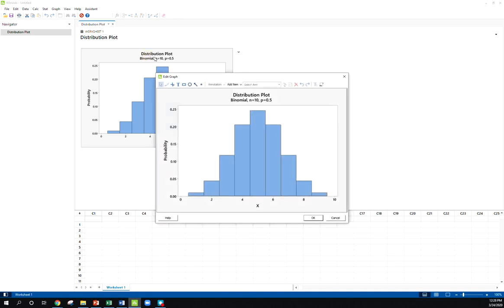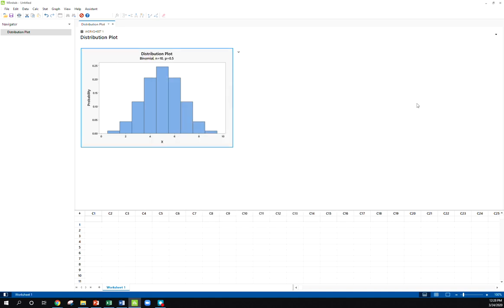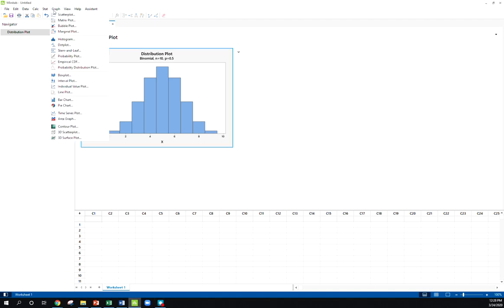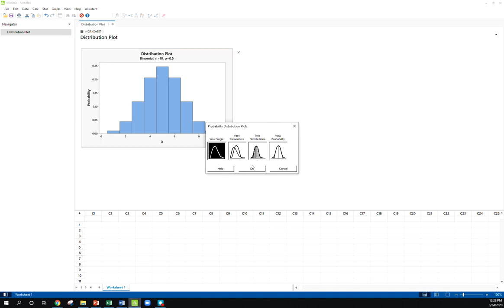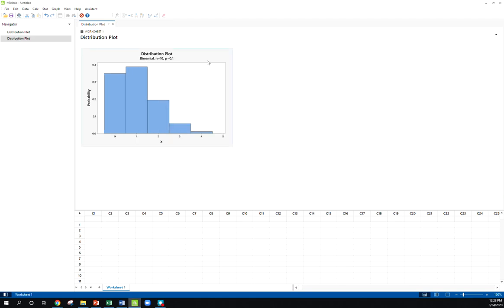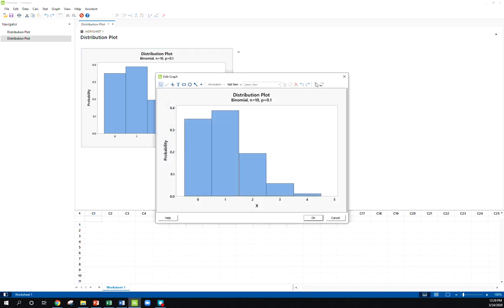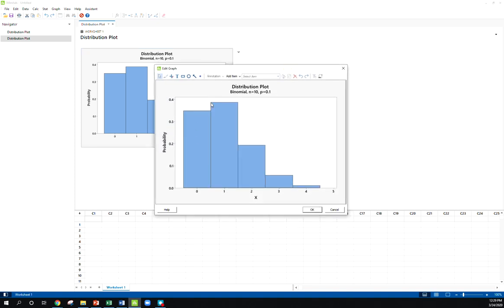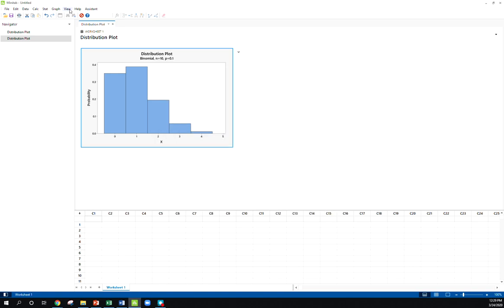But let's change things here a little bit. Let's graph a new binomial distribution. Let's keep n at 10, but let's shift our probability, our P, to say 0.1. Let's see what that looks like. Well, this definitely looks a lot different. It doesn't look normal. It looks pretty right skewed.